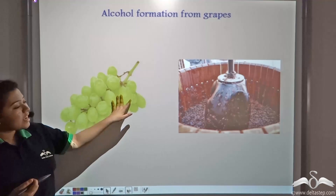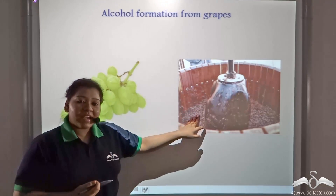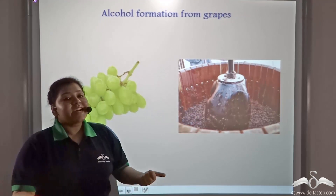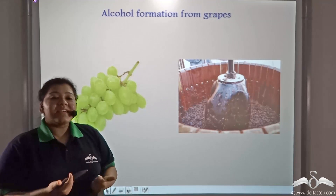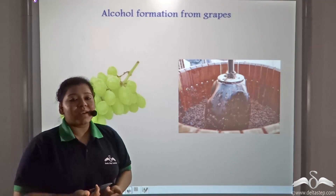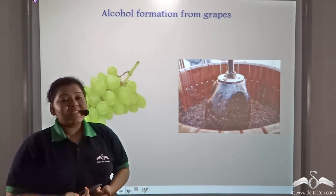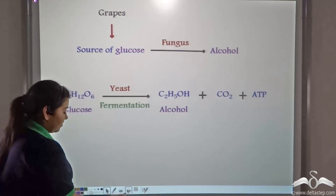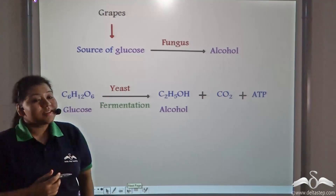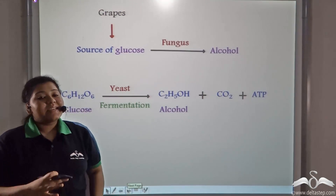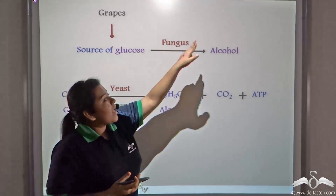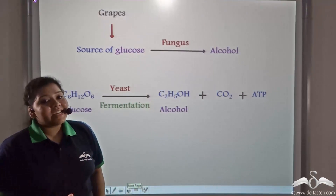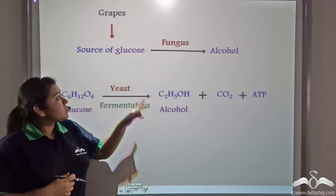Grapes are acted upon by yeasts and kept in airtight barrels so that the yeasts can grow anaerobically — that is, without the presence of air. Glucose gets converted into alcohol when fungus grows anaerobically.